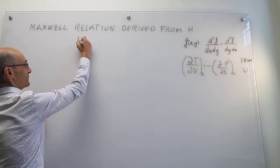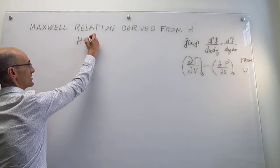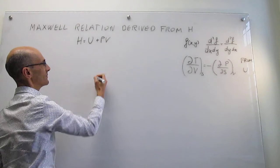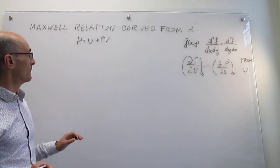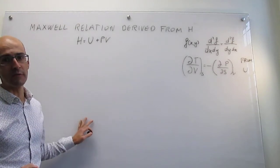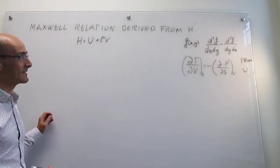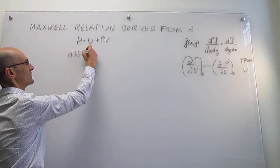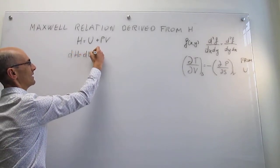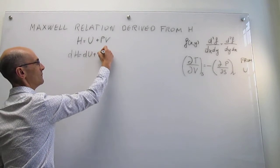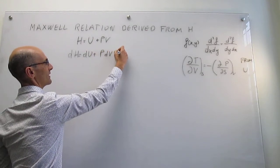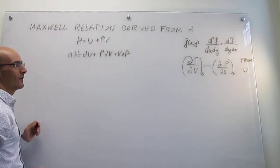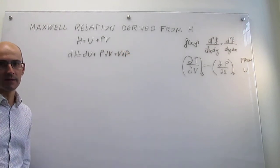The definition of enthalpy, which we used in the first law, is just the internal energy plus the product of the pressure and the volume. Let's take the total first derivative of this. So this is going to be dU plus V dP plus P dV — those are the total derivatives of this enthalpy expression.